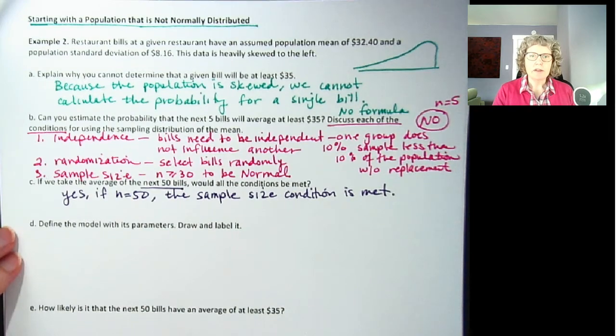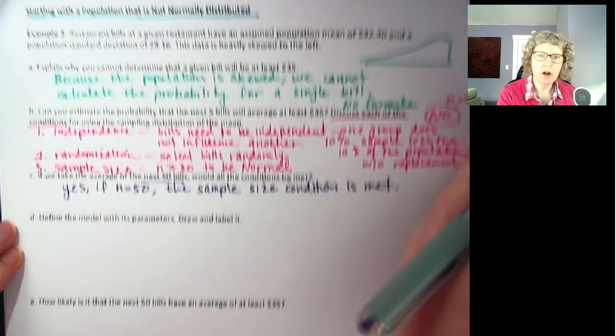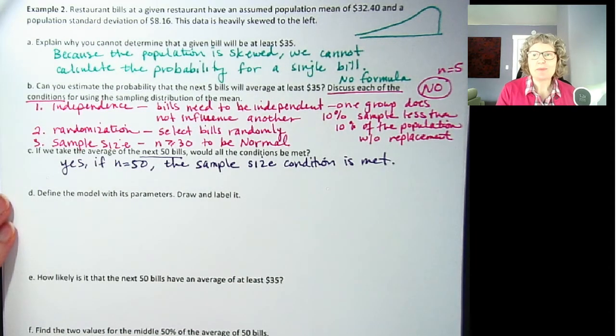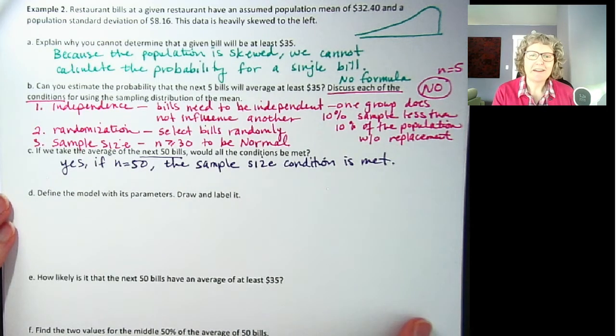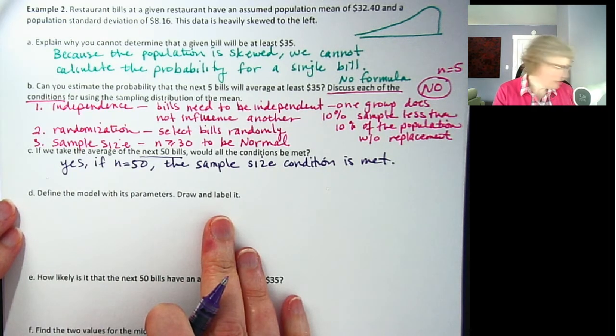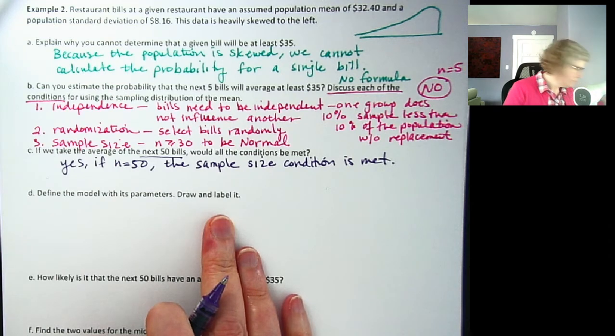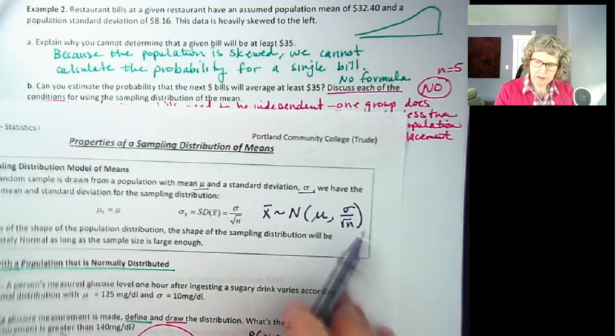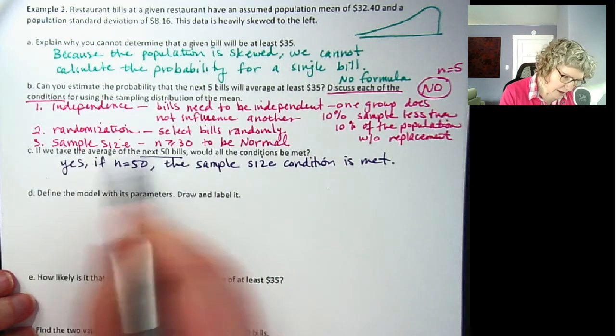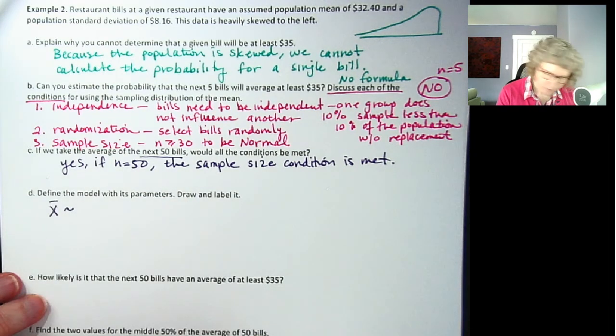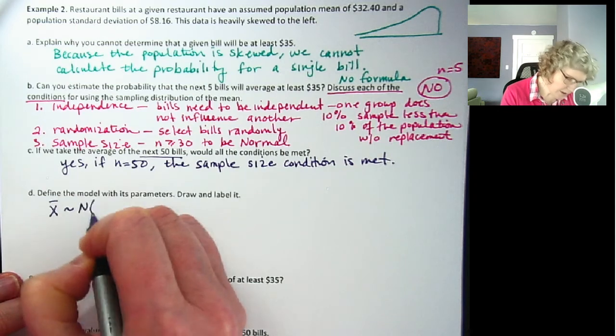But then if we take an average of the next 50 bills, then we could meet all those conditions, right? So yes, if N equals 50, the sample size condition is met. So now for 50, we can draw our model. So we can't do it for 1, can't do it for 5, can't do it for 29. Well, between 25 and 30 is debatable, but we're going to say N has to be greater than or equal to 30. So define the model with its parameters. So remember, we're going to use our formula box.